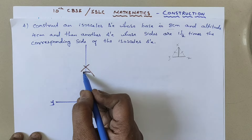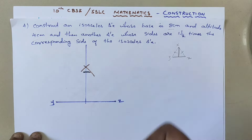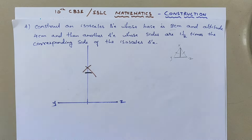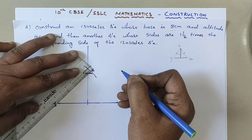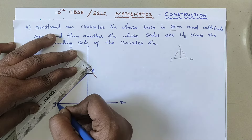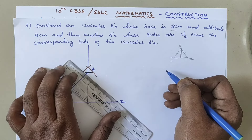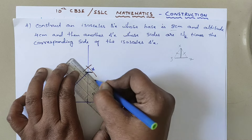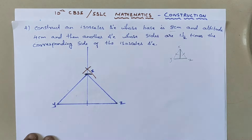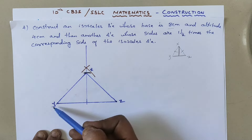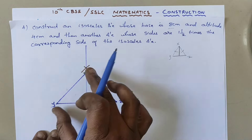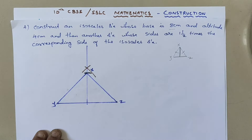This marked point is the exact altitude of 4 cm. Now join this point X to Y and X to Z. You have now drawn isosceles triangle XYZ, where XY and XZ are equal in measurement. If you measure both sides with a scale, they will have the same measurement.